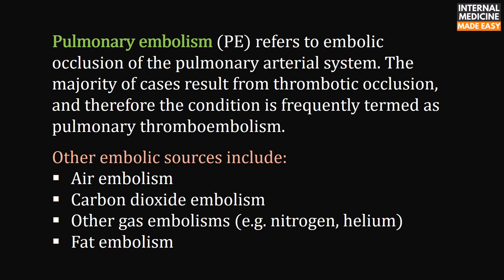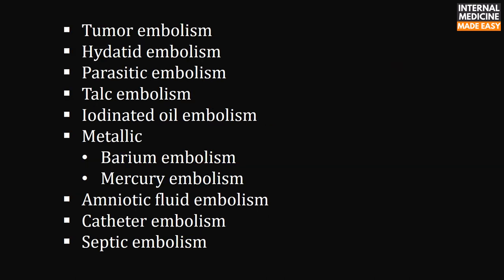Pulmonary embolism refers to embolic occlusion of the pulmonary arterial system. The majority of cases result from thrombotic occlusion and therefore the condition is frequently termed pulmonary thromboembolism. Other embolic sources include air, carbon dioxide, other gas embolisms like nitrogen and helium, fat embolism, tumor, hydatid, and parasitic embolism, talc, iodinated oil, metallic embolism like barium and mercury, amniotic fluid, catheter, and septic embolism.